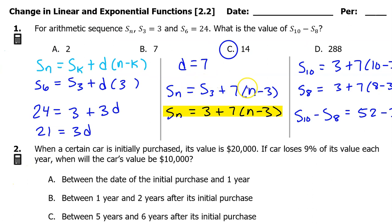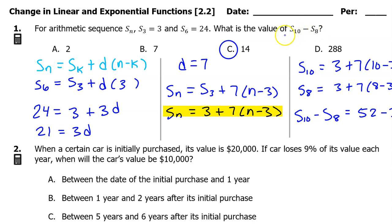By the way, here's a shortcut we could have used. Once we've found that the common difference is 7, we could notice that term 10 is two terms away from term 8, so the common difference will be applied twice, which gives us 14.